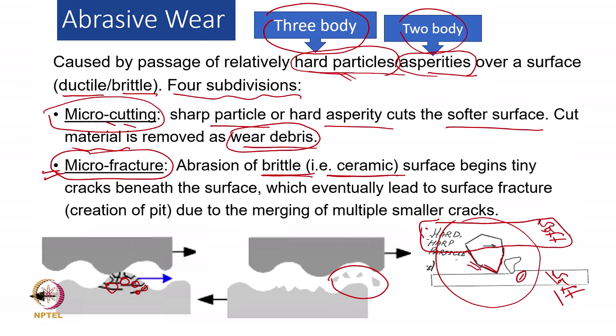In this case, the brittle material is essential. Initially there will be tiny cracks below the surface which will finally lead to surface fracture. We can say the pit — which itself can be micron-sized — will form because of the merger of small cracks. So these two subdivisions of abrasive wear are very common: micro cutting happens in case of ductile material, and micro fracture will occur in the case of brittle material.